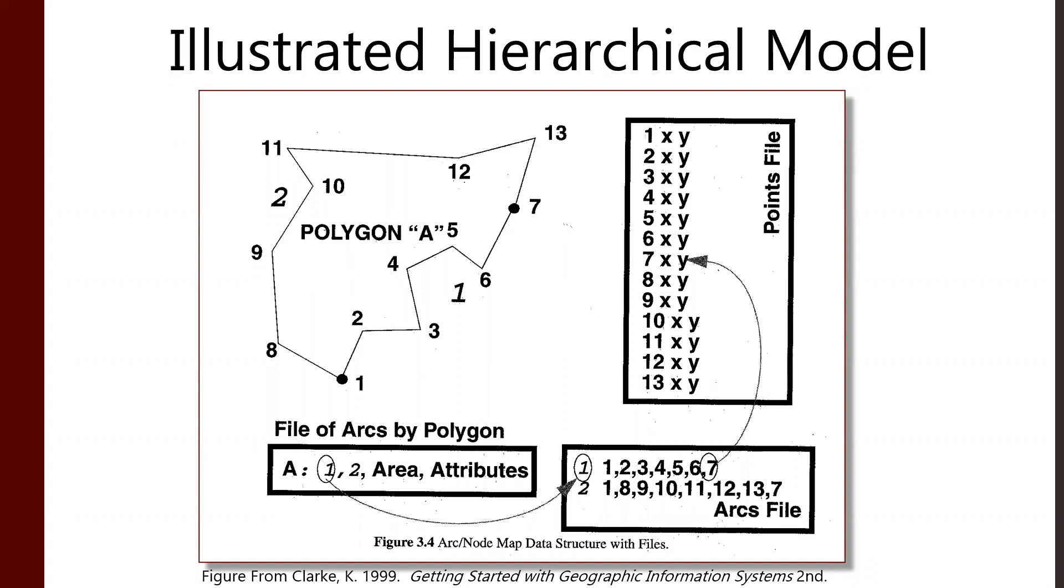Arc 2 runs between 1, 8, 9, so on and so on. And then our polygon is composed of arcs 1 and 2.